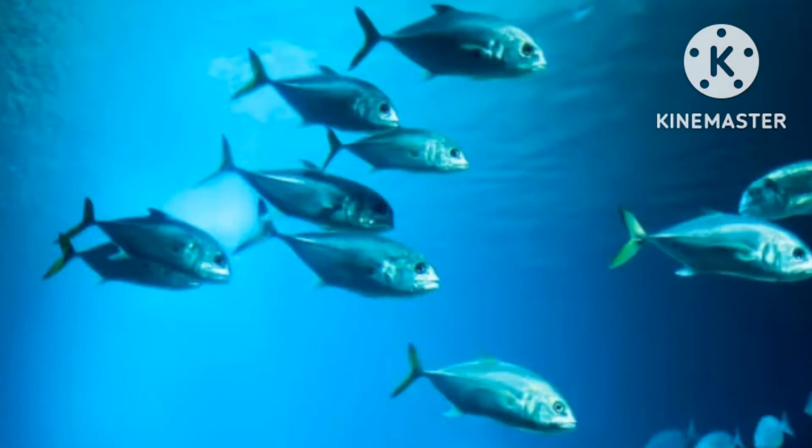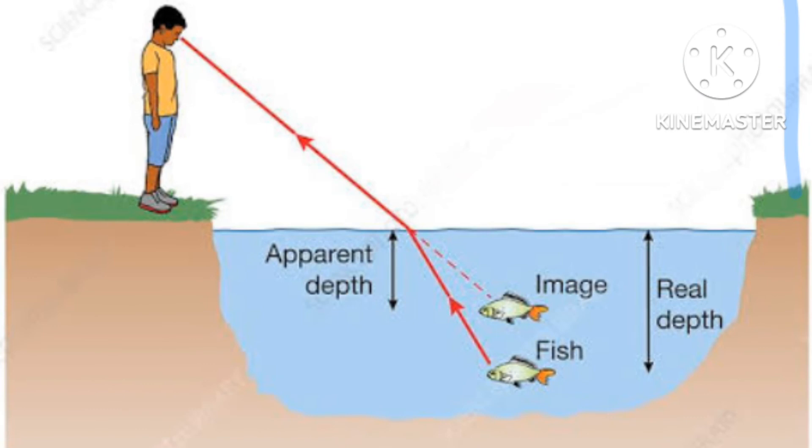The fishes underwater always appear to be lifted up from their actual position. This illusion generates due to refraction of light. Due to refraction, the light rays coming from the fish shift away from the normal, but our eyes and brain trace the light rays back into the water. That is why the fishes appear to be lifted up.